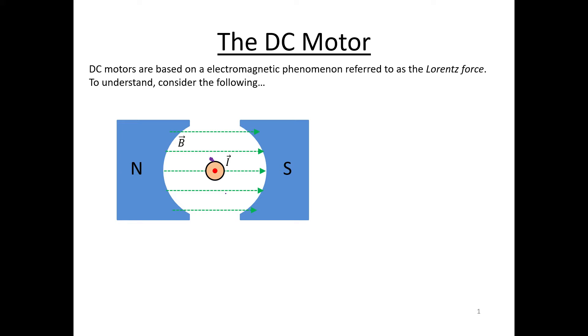When we put a current like that in a magnetic field that goes from the north pole of this magnet on the left to the south pole of the magnet on the right, it leaves north and goes into south.